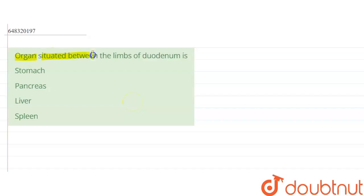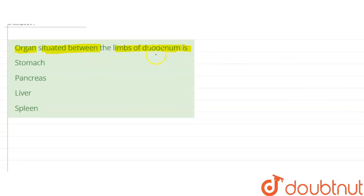Organ situated between the limbs of duodenum is: stomach, pancreas, liver, or spleen. Four options are given in this question, and each option is provided with a name of an organ. So we have to select the correct organ which is situated between the limbs of duodenum. Before we select the correct option, let's have a brief idea about the organ duodenum.